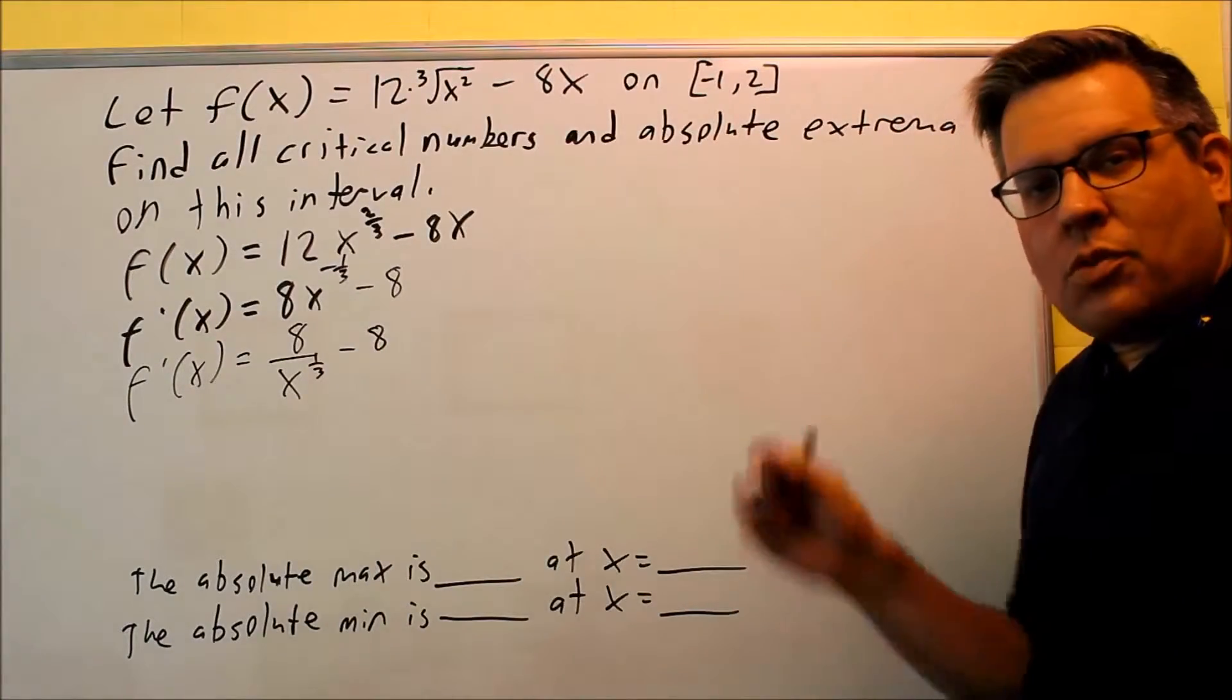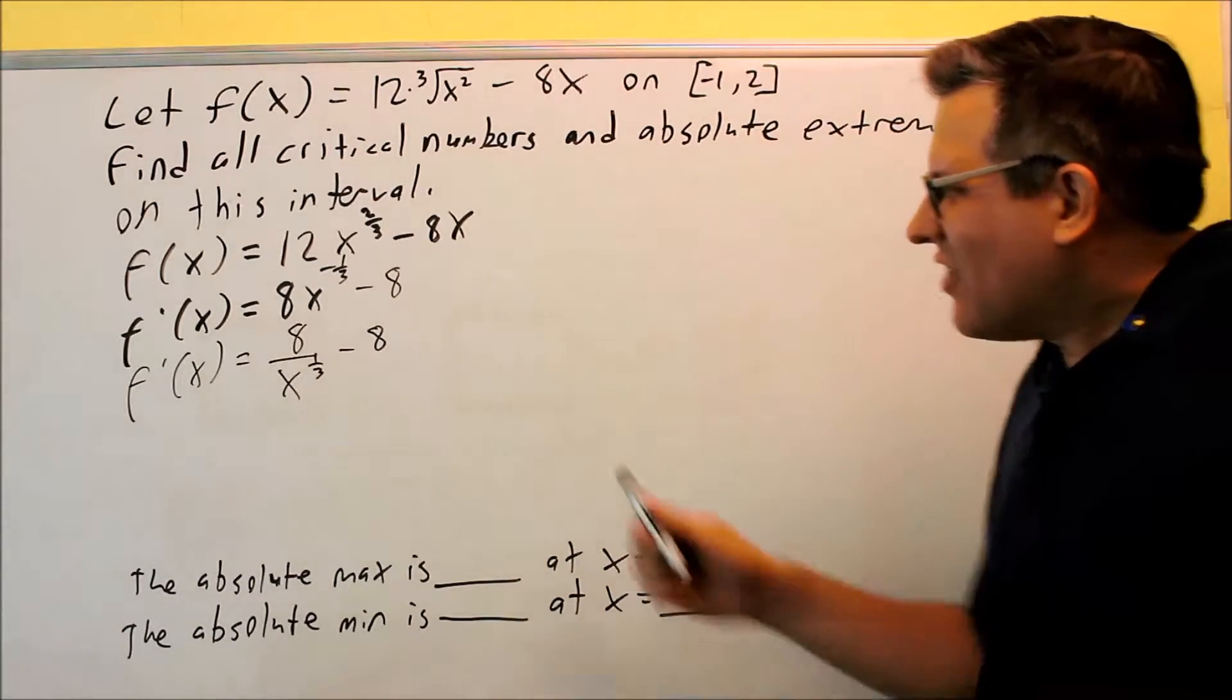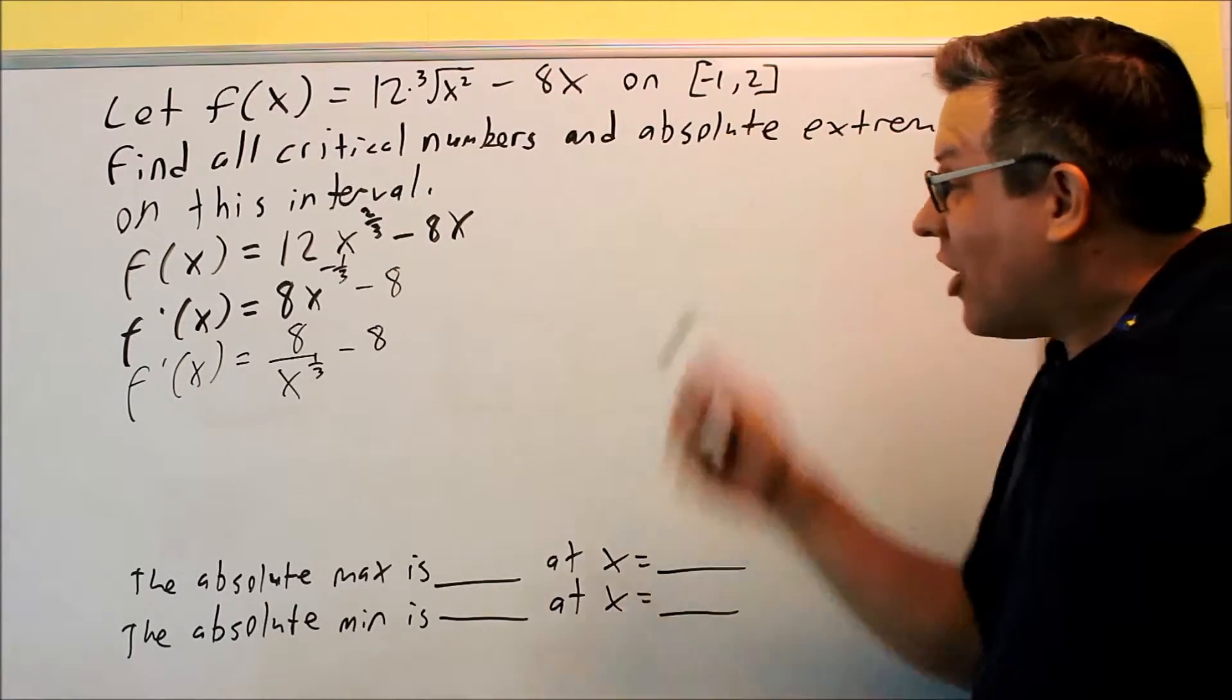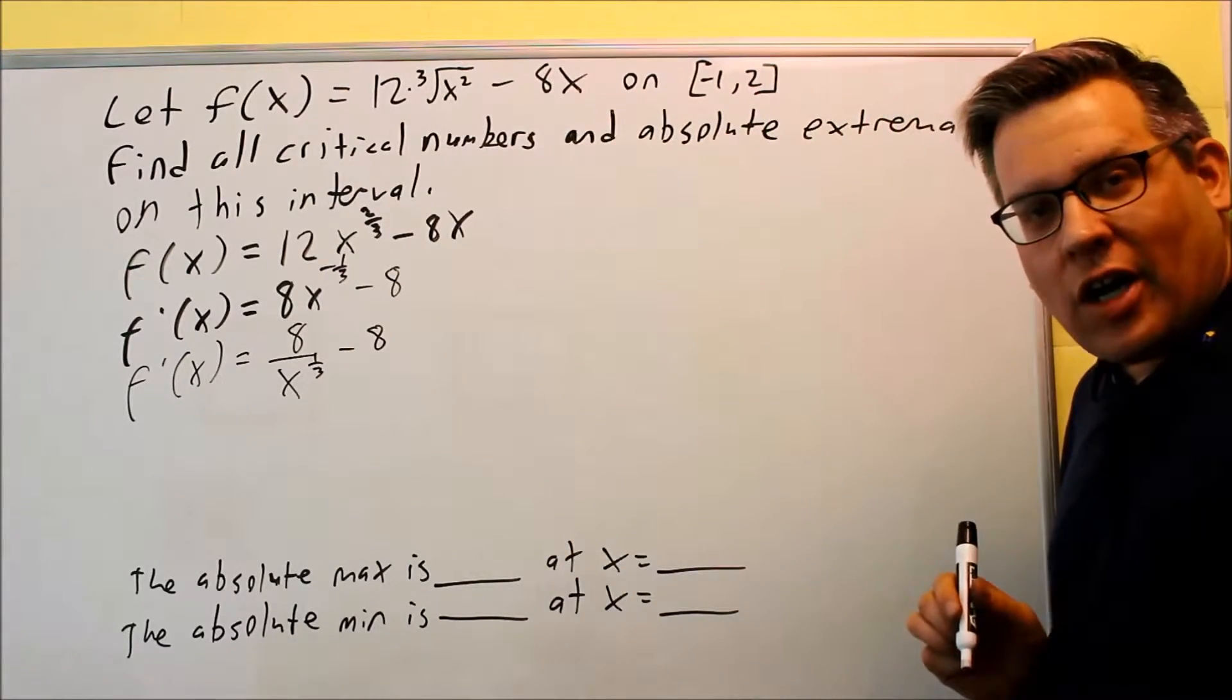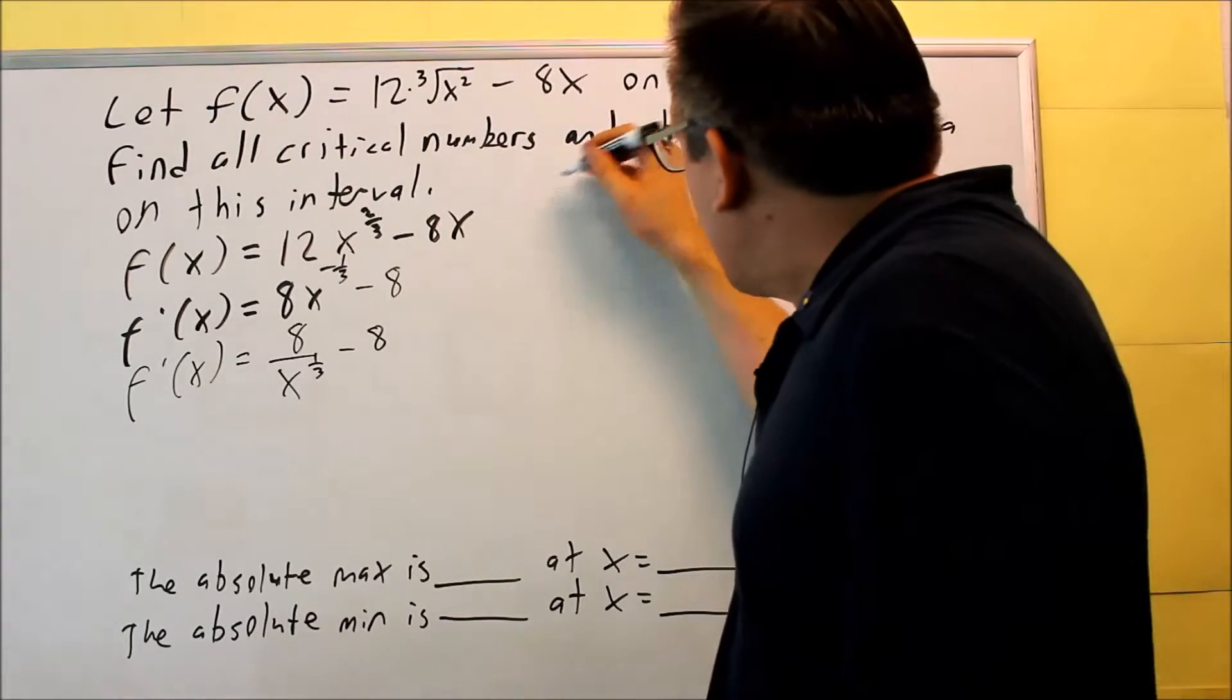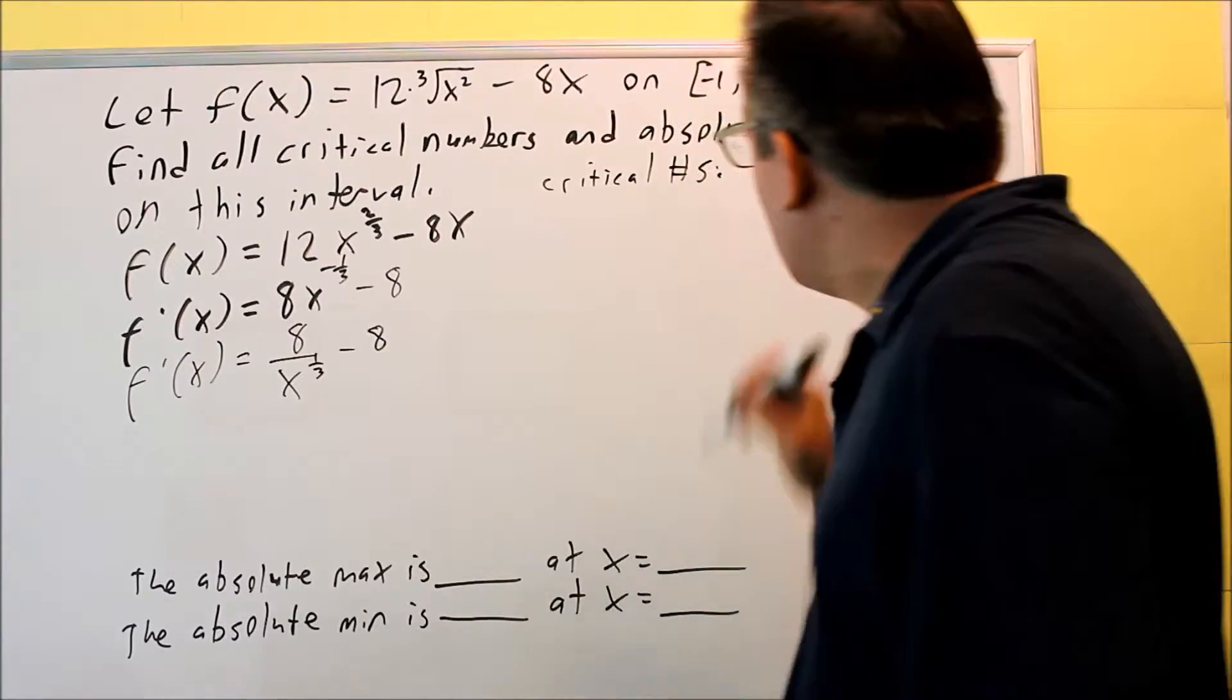Okay, so two ways that we find critical numbers. The first thing is, if there's any number on this interval from negative 1 to 2, any x value that makes the derivative undefined, that's a critical number. So I'm going to put the critical numbers up here.